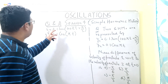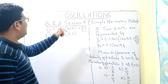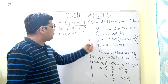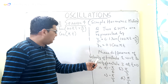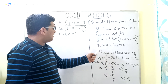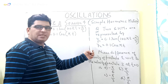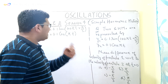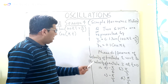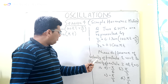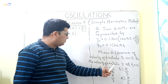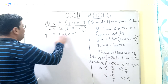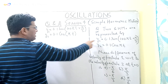Good evening everyone. This is the Q&A session 4 from the playlist of oscillations. The topic is simple harmonic motion. Today I have taken one question in which we will be required to find the phase difference between the velocity of two particles. Here y1 and y2 are the equations of displacement of particle 1 and particle 2, both executing simple harmonic motion. We have to find the phase difference of the velocity of particle 1 with respect to particle 2 at t equal to 0.